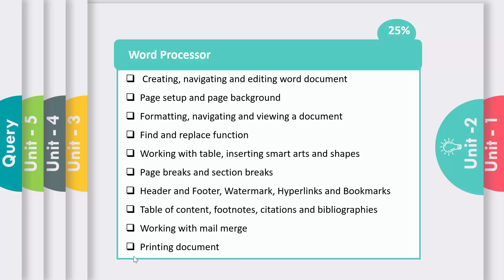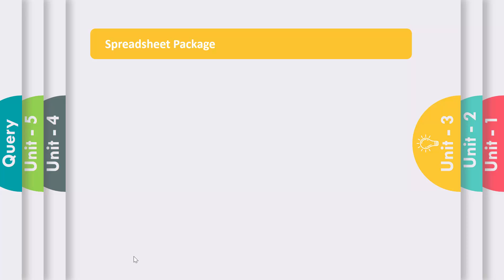All the topics in Unit 2 will also have practicals. I will upload videos of all the steps practically. This unit is most important — remember it has a weightage of 25%, so you have to prepare this unit compulsorily. The next unit, Unit 3, is about spreadsheet package, meaning Microsoft Excel, and it has a weightage of 35%.